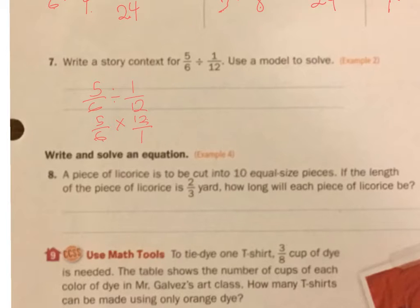Now, I see that 6 and 12, I could divide each side by 6, and that gets me 1 here, and it gets me 2 here. 5 times 2 is 10, 1 times 1 is 1. So it is... The answer is 10. Okay.